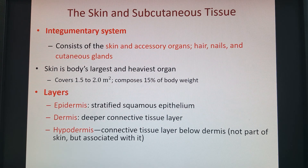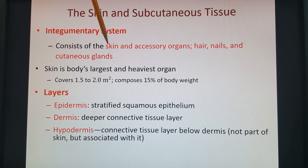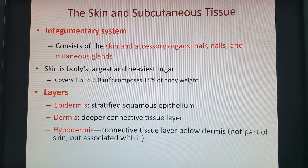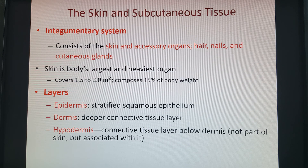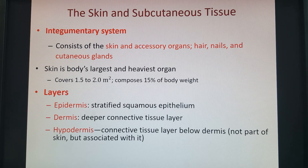Our integumentary system is made up of our skin, the accessory organs — so hair, nails — and our cutaneous glands, like sweat and oil glands. It's our largest and heaviest organ just because of its massive surface area, which ends up with a lot of tissue.